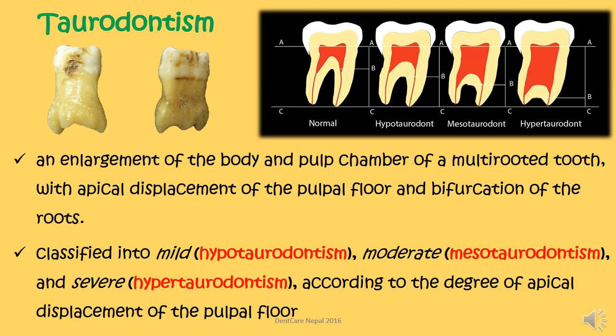Taurodontism is the enlargement of the body and pulp chamber of a multi-rooted tooth with apical displacement of the pulpal floor and bifurcation of the roots. Based on the severity, as seen in the picture, it is classified into mild, moderate, and severe, respectively called hypo-taurodontism, meso-taurodontism, and hyper-taurodontism, according to the degree of apical displacement of the pulpal floor.